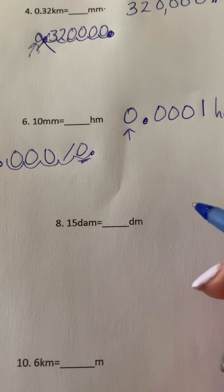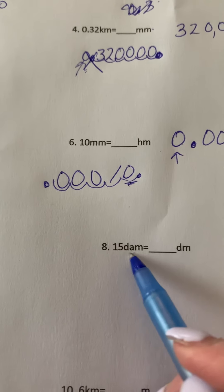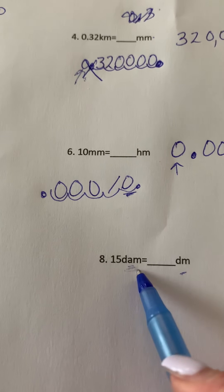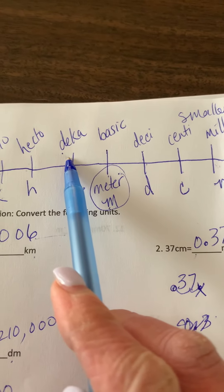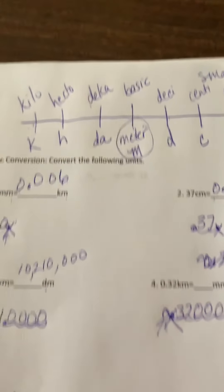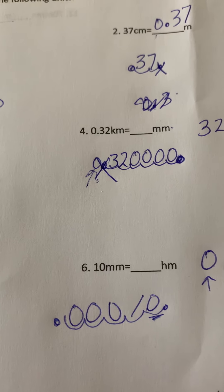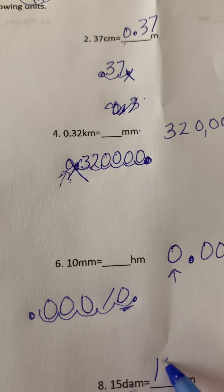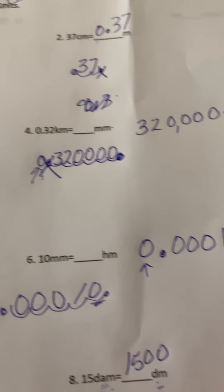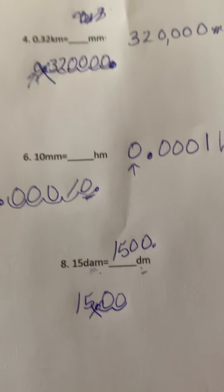Next one. 15 decameters. So I put these ones on here so you can see the difference: D-A-M versus just D-M. So 15 decameters here. Let's go up here to our chart. Decameter to decimeter. We're moving two places to the right. One, two. Put the zeros in. Scratch out the original decimal. And remember, in a whole number, we don't have to put the decimal in. If you put it in, you're not wrong.